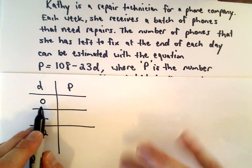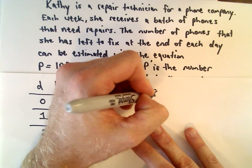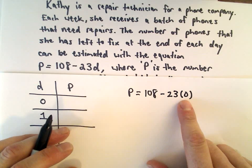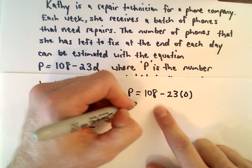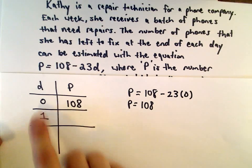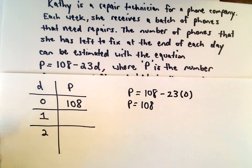So, if she works 0 days, we would have P equals 108 minus 23 multiplied by 0. Well, 23 multiplied by 0 is 0, so we would be left with 108. So, if she doesn't work at all, it says she still has 108 phones left to fix, which is probably enough to kind of tell you what's going on here.